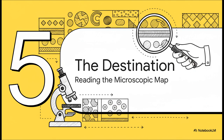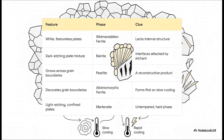A metallurgist can look at a piece of steel under a microscope and, by identifying these different structures, literally read its history — it's like microscopic forensics. When a metallurgist sees a complex mixture, they decode it piece by piece. Structures decorating old grain boundaries? That's allotriomorphic ferrite — a clear sign of slow cooling. A colony growing right across a boundary? That has to be a reconstructive product like pearlite. Dark, plate-like structures trapped inside a grain? That's bainite. Light-etching hard plates? That's martensite — the telltale sign of a rapid quench at the end.